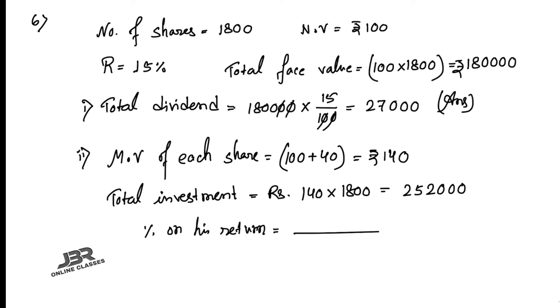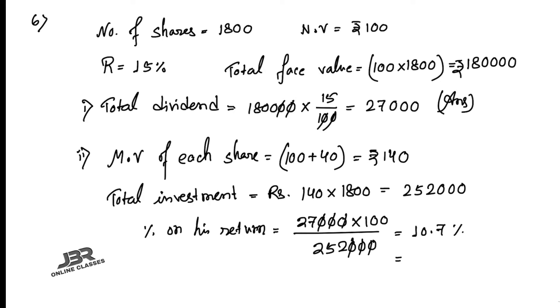The percentage return on investment = (27,000 × 100) ÷ 2,52,000 = 10.7%, or approximately 11%. Now moving on to sum number seven.